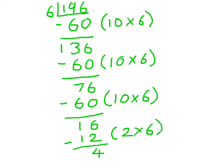And all I need to do now to give me the answer is add the lots of 6 that I've put in the brackets here. And that will give me a total of 32 and remainder 4. And that's using the chunking method for division.